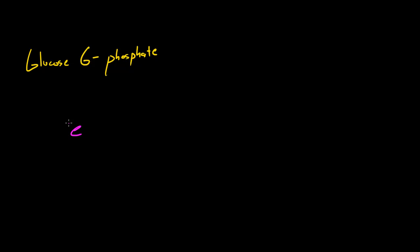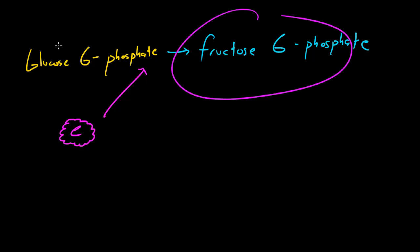This other enzyme is called phosphoglucose isomerase. What this does is it takes your glucose 6-phosphate and turns it into another molecule called fructose 6-phosphate. A couple things I want to point out: fructose 6-phosphate has the exact same molecular formula as glucose 6-phosphate.